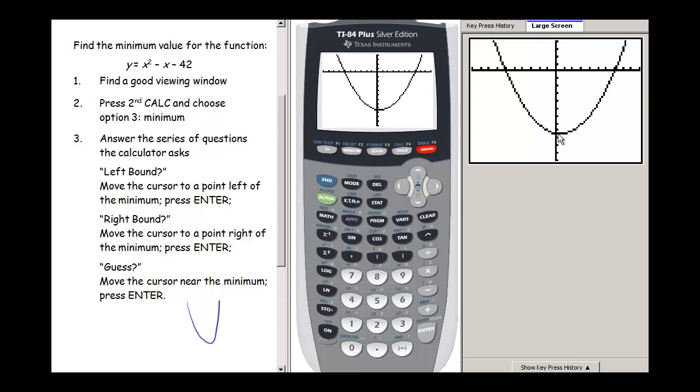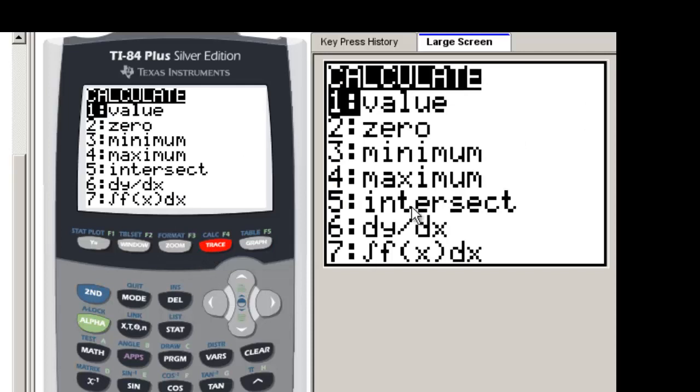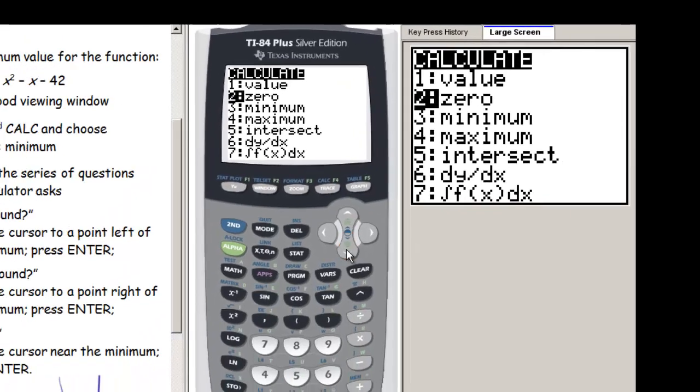And what I want to do is I want to find this spot down here where our parabola reaches its minimum value. The way we're going to do this is we're going to use the calc menu to have our calculator find that spot for us. So if we press 2nd and then trace, that gets us into our calc menu. And we have lots of options here.